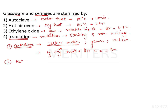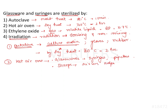For hot air oven, the most important indications are all glassware such as syringes, flasks, pipettes, and test tubes. It is also used for sharp surgical instruments like scissors and scalpels. Non-sharp surgical instruments can be sterilized by autoclave. Chemicals like dusting powder and liquid paraffin are also indications for hot air oven.